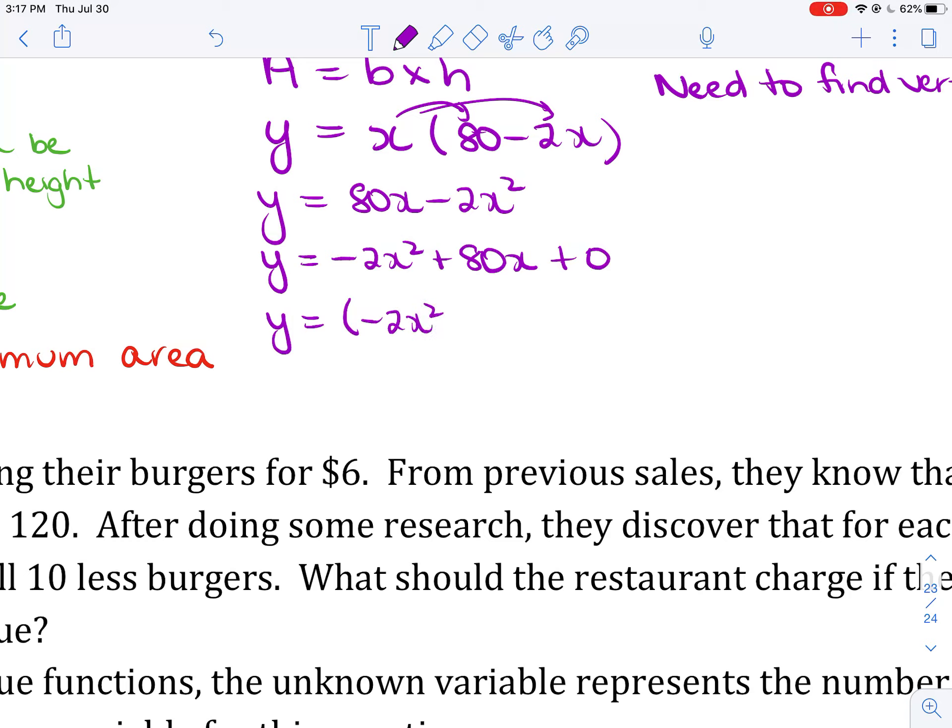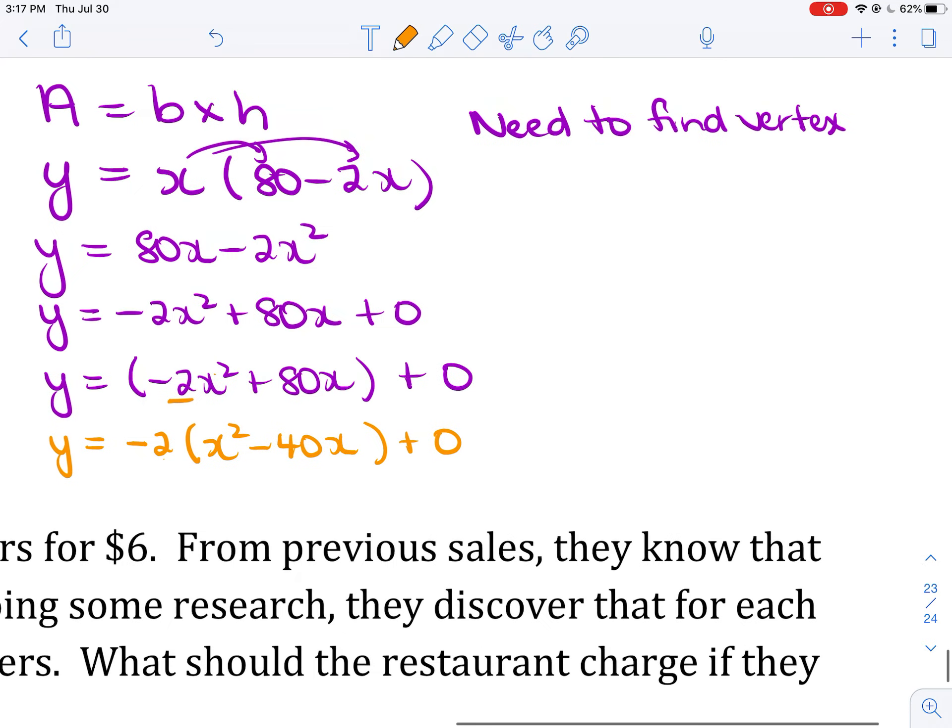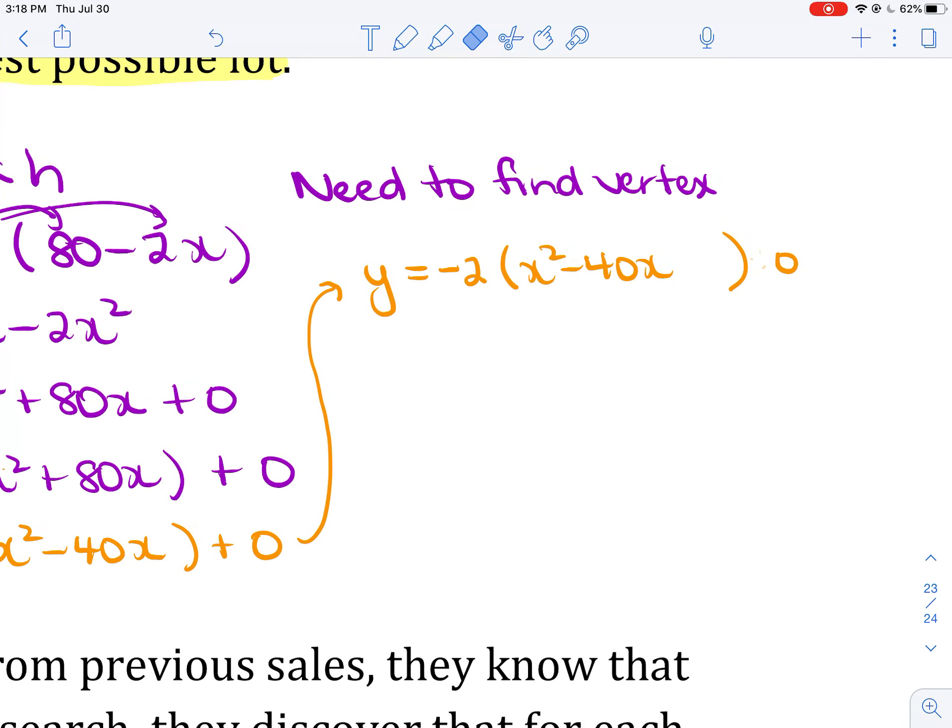So now, I need to go to standard or vertex form. So I will group the negative 2x squared together with the 80x plus 0 stays outside. But here again, we have this minus 2. I need to factor minus 2 out. So minus 2 comes out. Negative 2x squared divided by negative 2 is x squared. 80 divided by negative 2 is a minus 40x plus 0 is still there. And now, I go about making a perfect square trinomial inside that bracket.